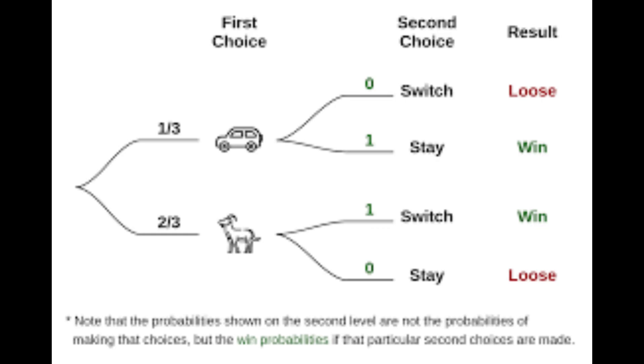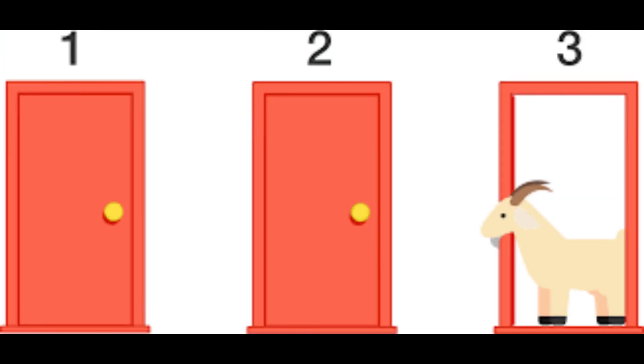Let's break down the setup. You have three doors. Behind one is the car, and behind the other two are goats. You pick one door, for example, door number one. Monty, the host, then reveals a goat behind one of the two doors you didn't choose, say, door number three.